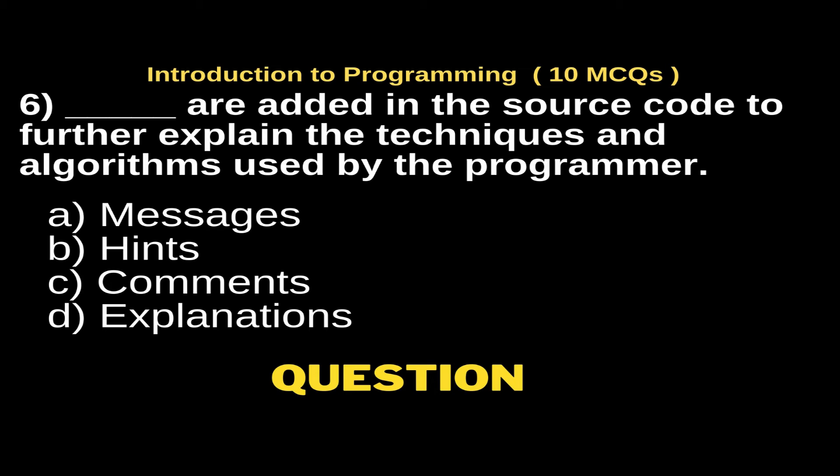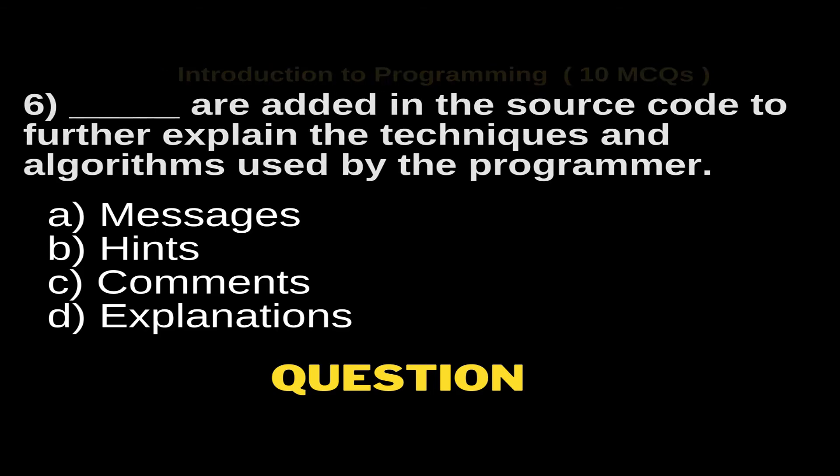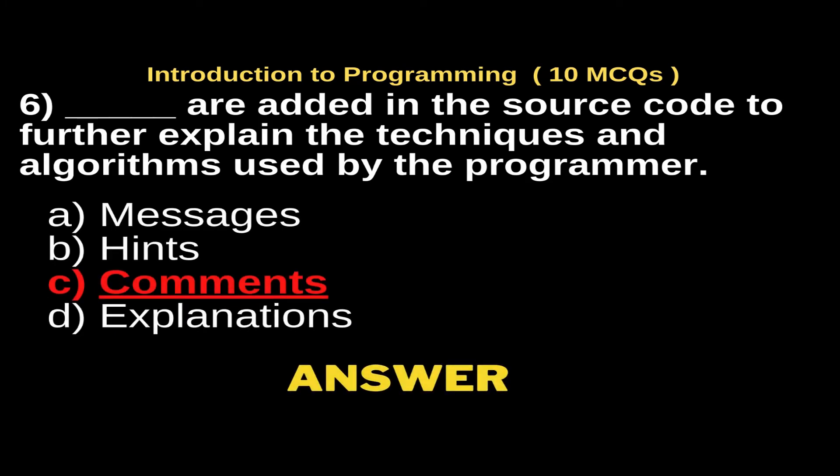Dash are added in the source code to further explain the techniques and algorithms used by the programmer. Option A, messages; Option B, hints; Option C, comments; Option D, explanation. And the right answer is Option C, comments.